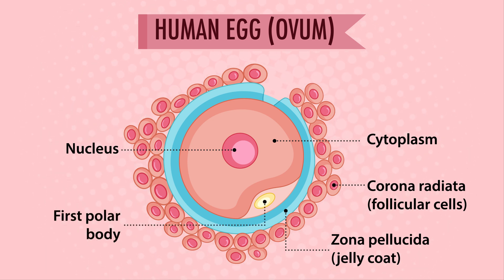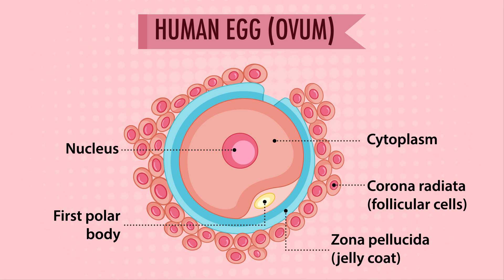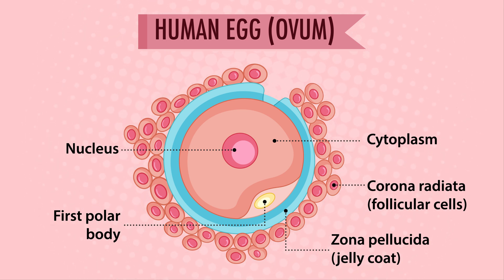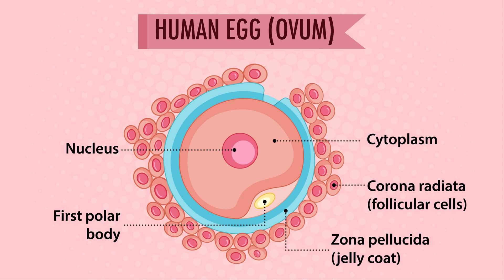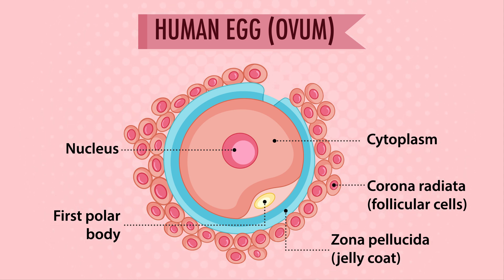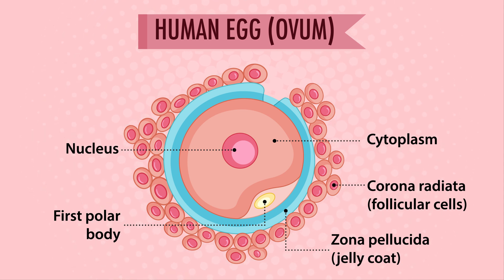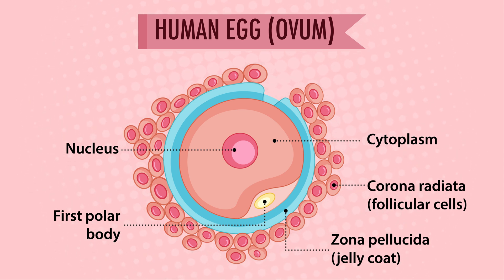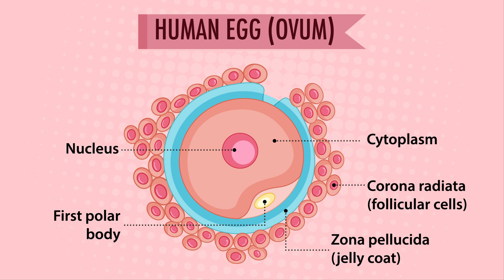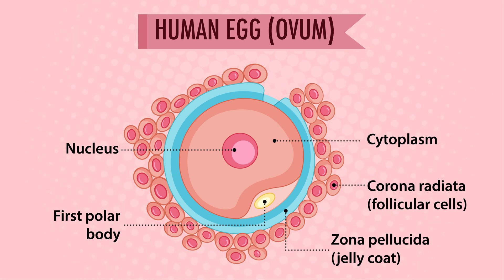The larger cell is known as the secondary oocyte, while the smaller cell is known as the first polar body. The second meiotic division also involves comparable uneven cytokinesis — the mature egg ovum retains the majority of the cytoplasm, while a second polar body only receives a haploid nucleus.